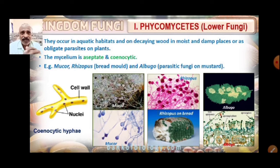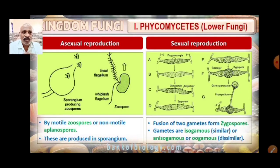Examples of Phycomycetes: Rhizopus is one example — it grows on bread. Albugo is one more example; it is a parasitic fungus on mustard. Mucor is also there. These are the different examples for the Phycomycetes.